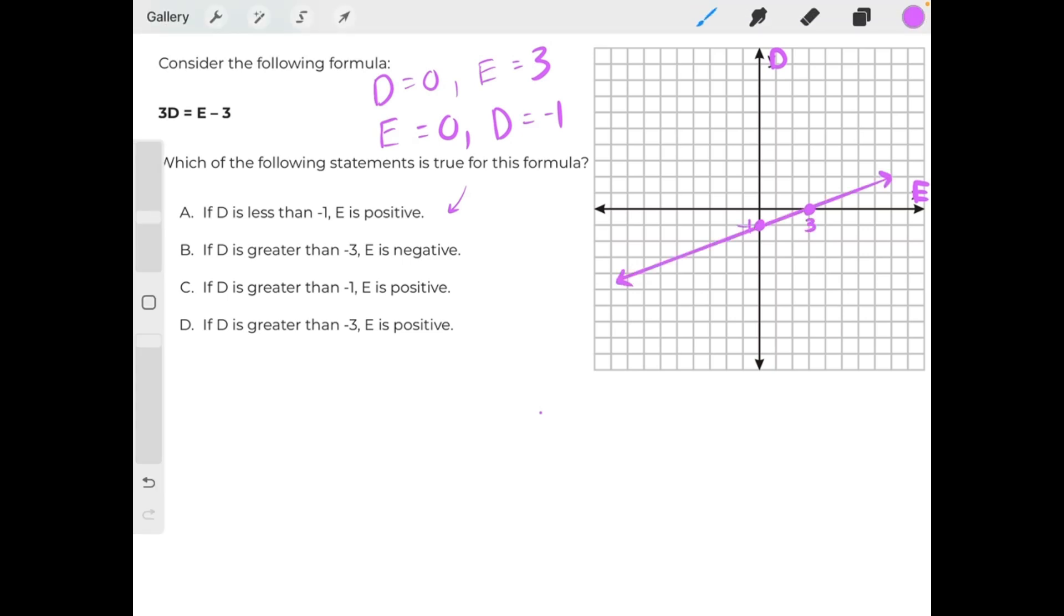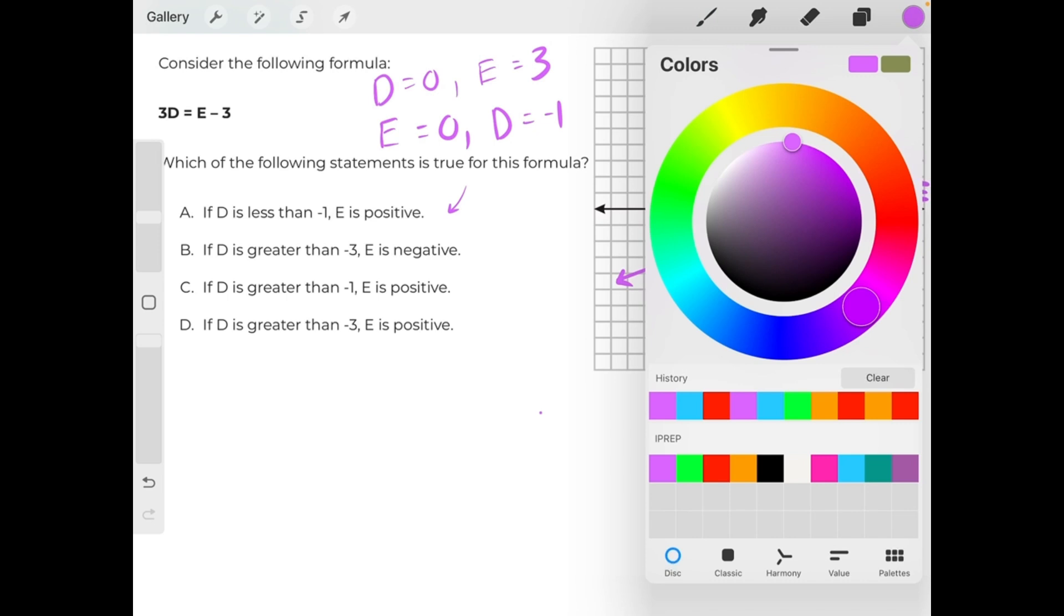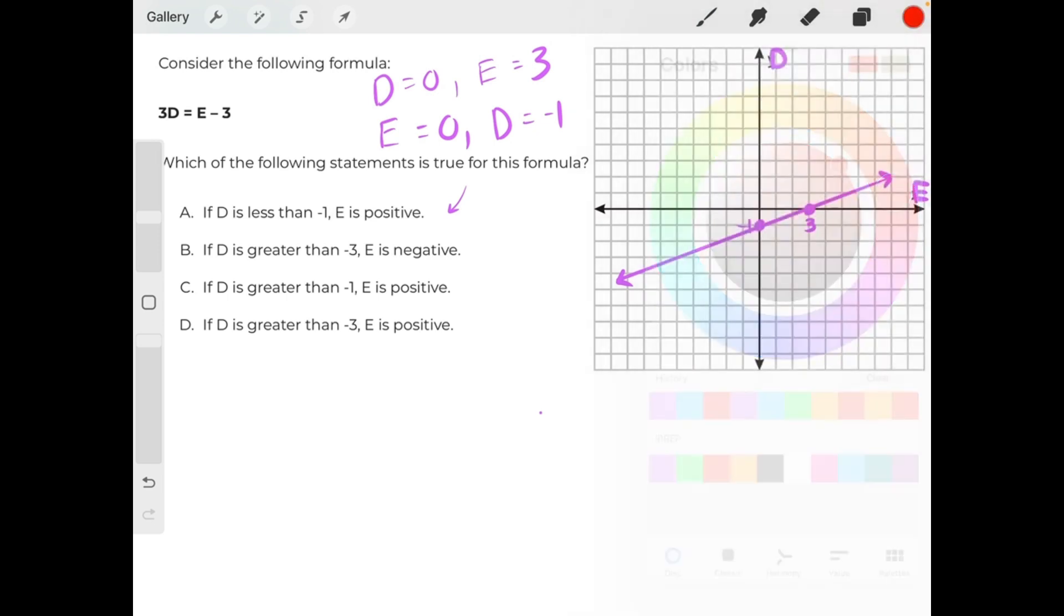Now that we can visualize a graph, we can check each of these statements to see which ones are true and which ones are false. Starting with answer choice A, if d is less than negative 1, so all of this over here, when d is less than negative 1, e is positive.